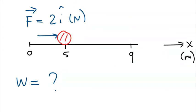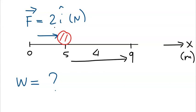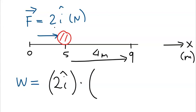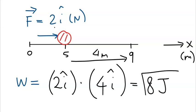Exercise: an object is acted on by a force of 2 N in the î direction and is displaced 4 m to the right. The work done is W = (2î) · (4î) = 2 × 4 × (î · î) = 2 × 4 × 1 = +8 joules.